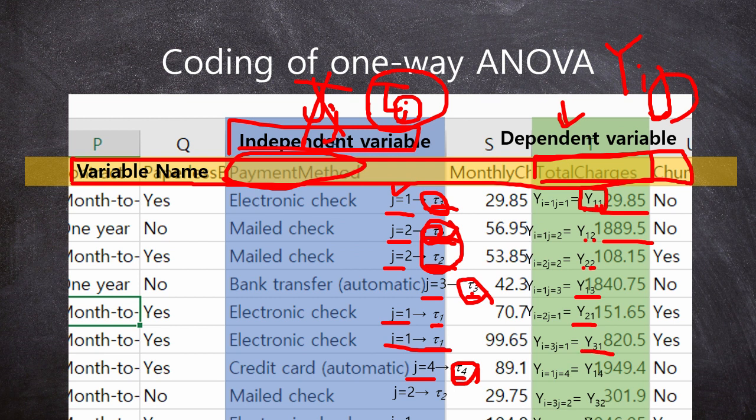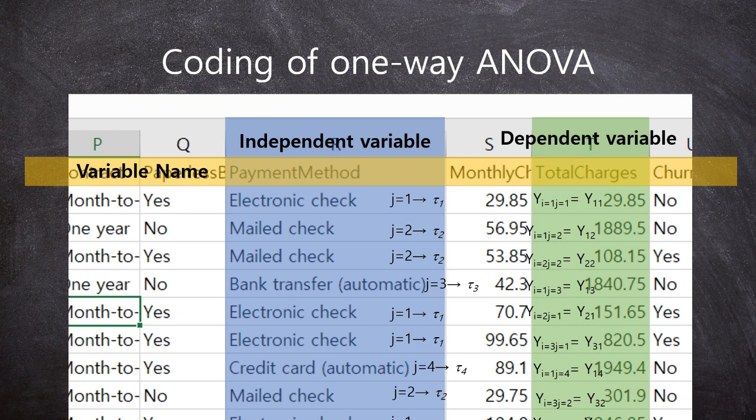This is the third observation of first group. So, y_31. And, this is the first observation of fourth group. So, it's y_14. So, y_ij could describe all kinds of, all types of dependent variable. Okay? It's so simple. And, I think it is nothing. Even though you don't know this numbering, you can analyze and you can interpret the result of one-way ANOVA.